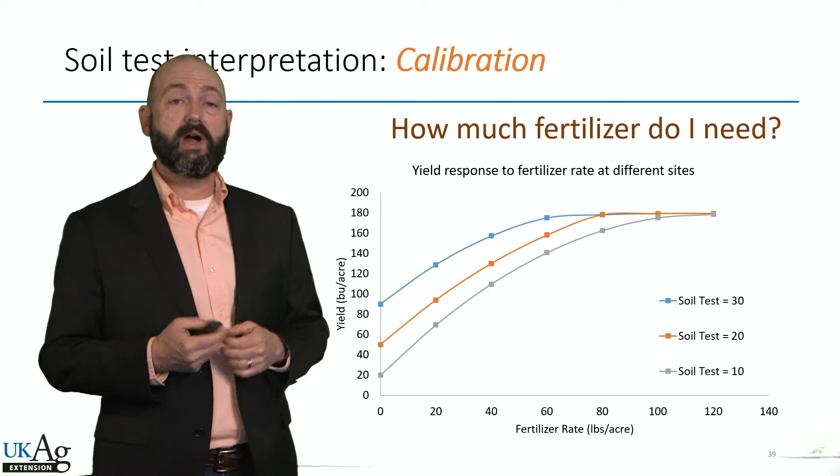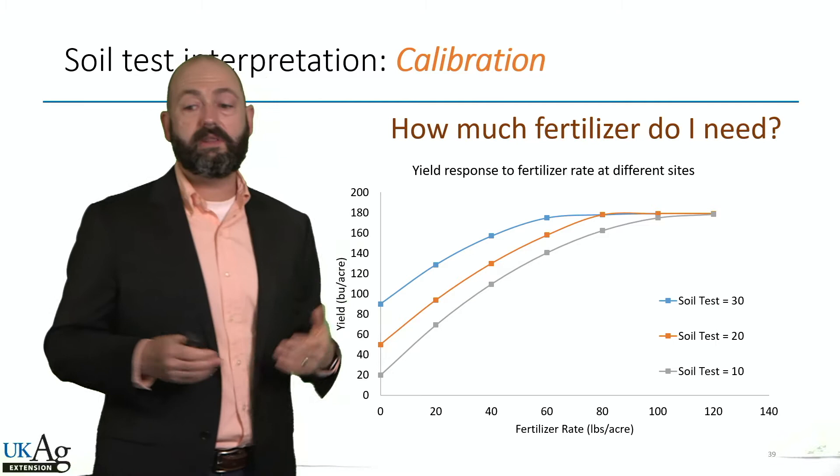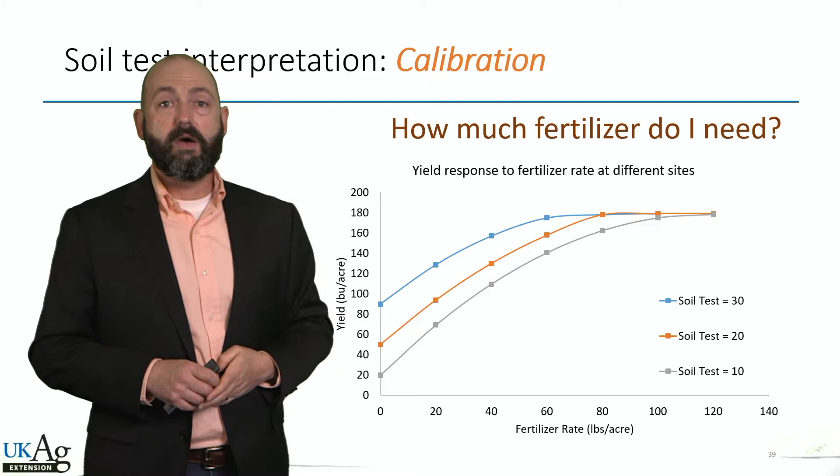We're going to go across different sites that have different soil tests, and at each site we're going to apply multiple rates. In this example, we use phosphorus fertilizer rate on the horizontal axis and yield on the vertical axis. We've got three different sites with three different soil test levels and we look at what rate of fertilizer on that horizontal axis maximizes yield.